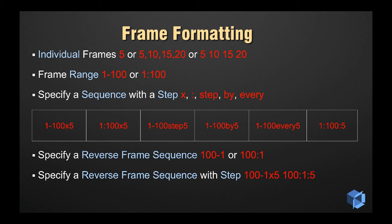To specify a frame sequence in reverse with a step, we simply add one of the optional step characters or words to the end combined with the actual step integer value. In our example, we want to render a reverse sequence starting at frame 100, finishing at frame 1, and render every fifth frame.